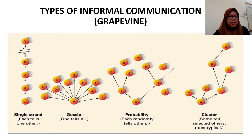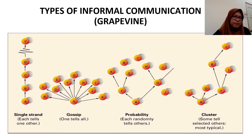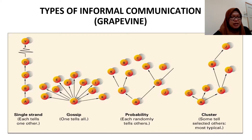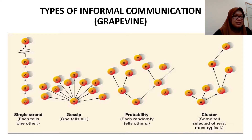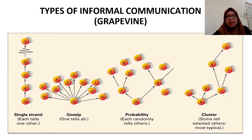The first type is single strand — each person tells one another. Here, person A passes information to B, B passes it to C, C passes it to D, and so on. Each person receives the information and then passes it along to the next person in the line.